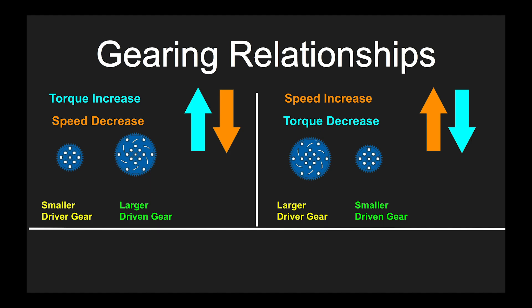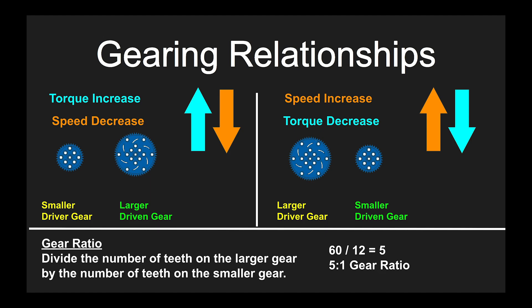To calculate a gear ratio, we divide the number of teeth on the larger gear by the number of teeth on the smaller gear. For example, a 60-tooth gear to a 12-tooth gear is 60 divided by 12, which equals 5 — giving a gear ratio of 5 to 1.